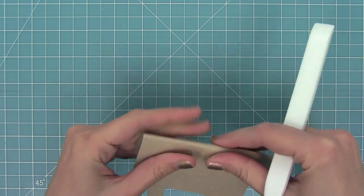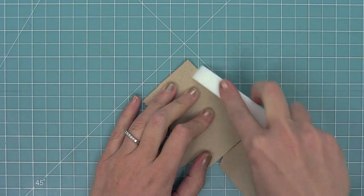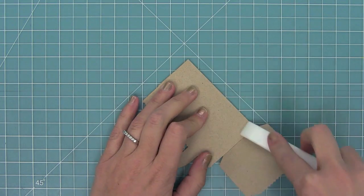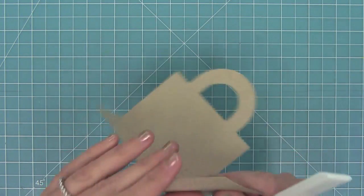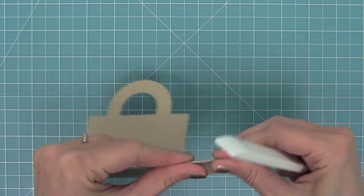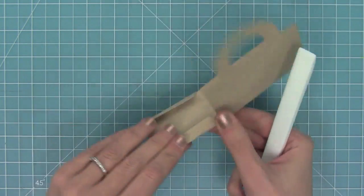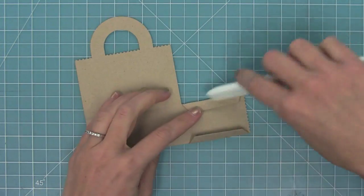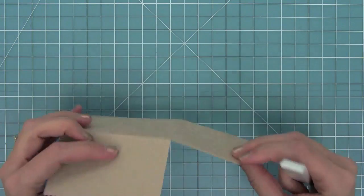Now I'll fold down that second score line and use my bone folder once again to crease it really well. Then I'm going to fold down those two little tabs on the sides, and once again I'm going to repeat folding those down really well with the bone folder. Those crisp edges really do make a difference.